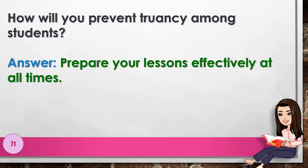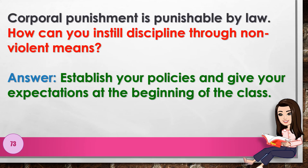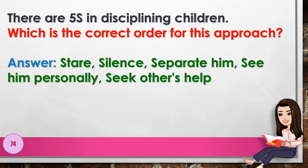Number 72: What will be the most effective way of dealing with non-participative students? Answer: employ engaging and enjoyable activities. Number 73: Corporal punishment is punishable by law. How can you instill discipline through non-violent means? Answer: establish your policies and give your expectations at the beginning of class.